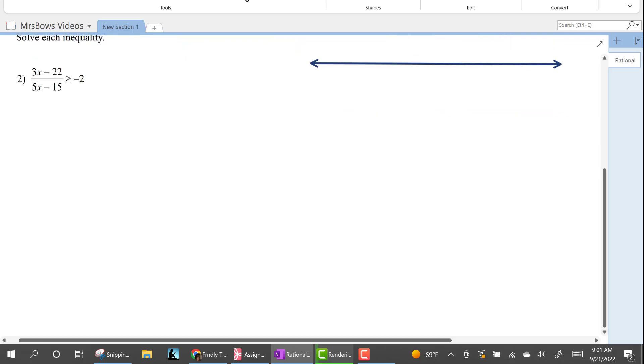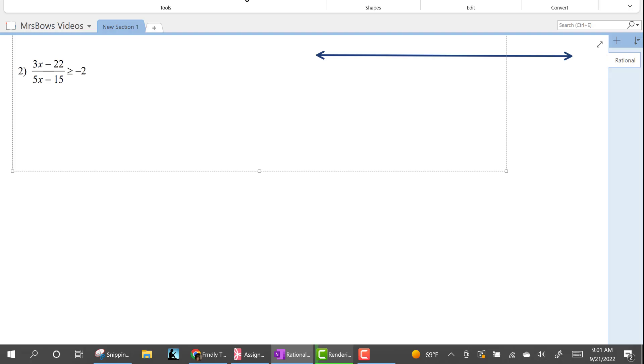Okay, so now here is another example of a rational inequality where zero is not on the right side or the left side.